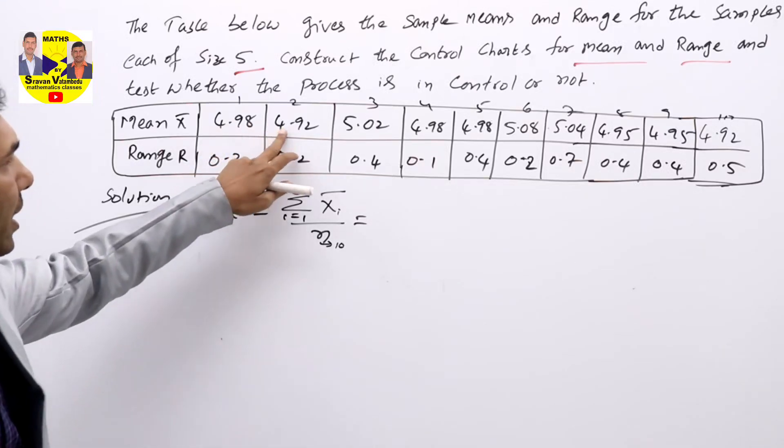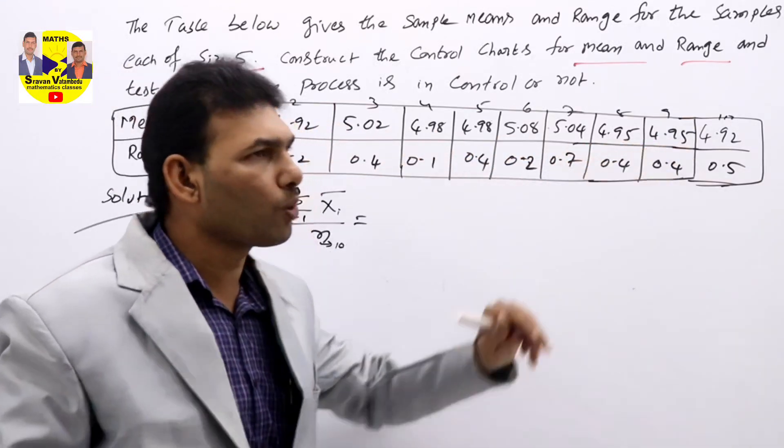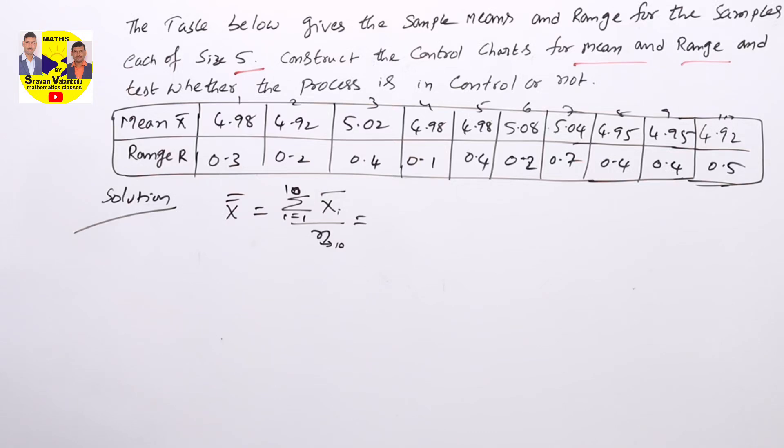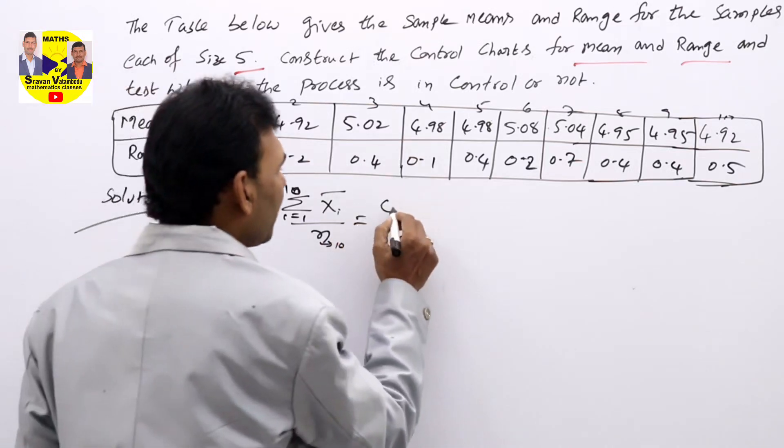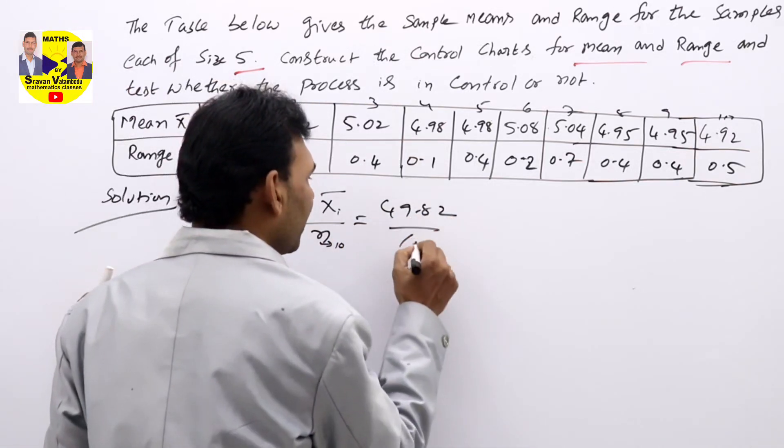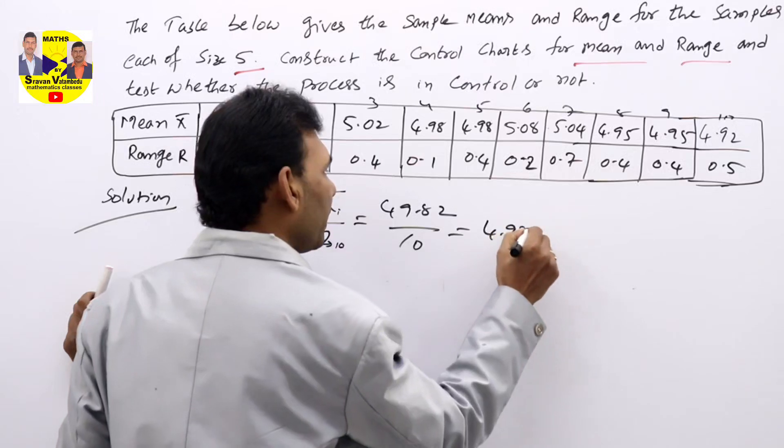That means add 4.98 plus 4.92 up to 4.92. If you add, you will get 49.82, divided with 10 gives 4.982.